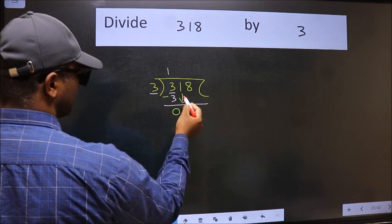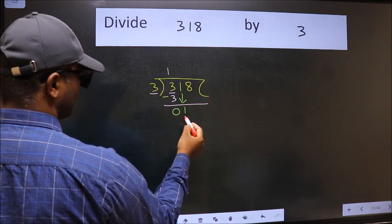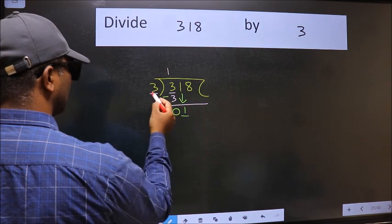After this, bring down the beside number. So 1 down. Now here we have 1 and here 3.